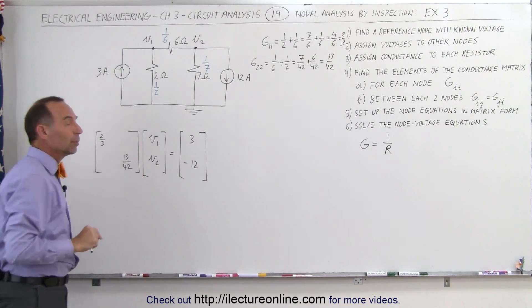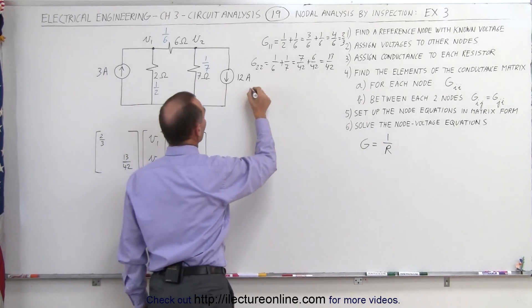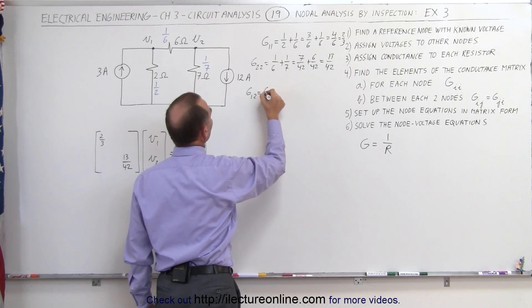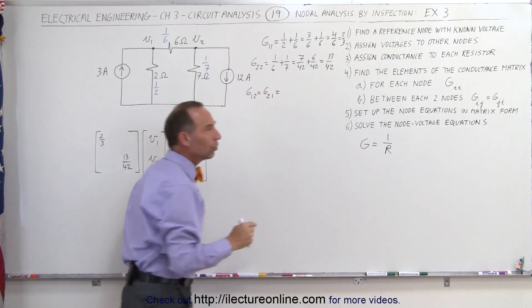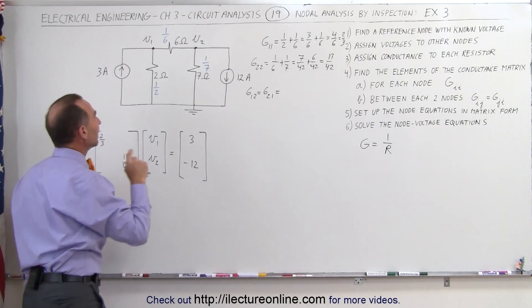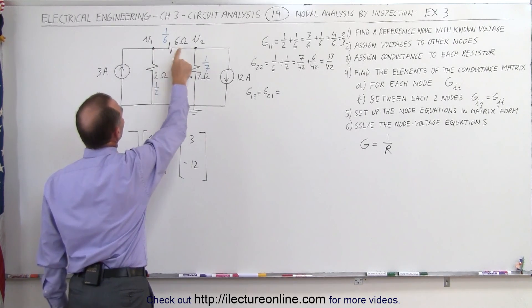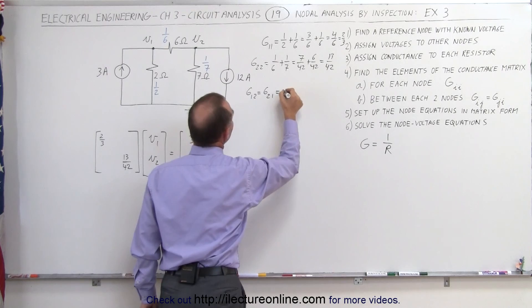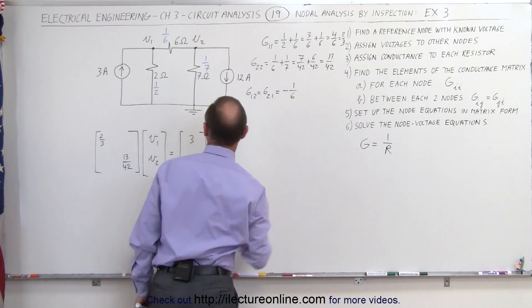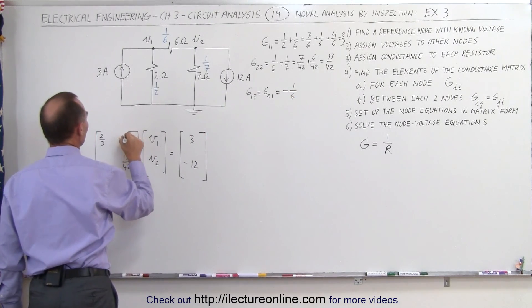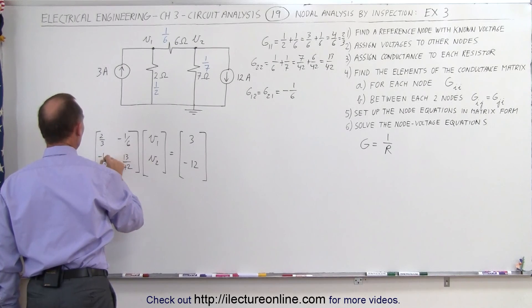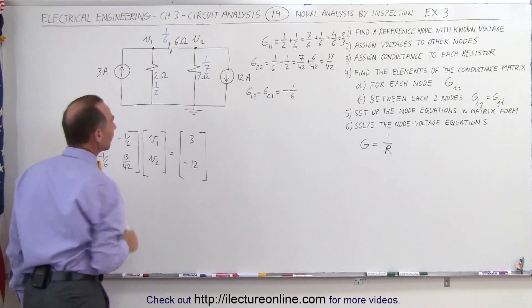Now we need the off diagonal elements. Here we find G12, G12, which is equal to G21, which is equal to the conductance connecting the two nodes, the direct connection, which is right here, and it's the negative of that, negative 1 over 6, so we write here negative 1 over 6 and negative 1 over 6, so those are the off diagonal elements.